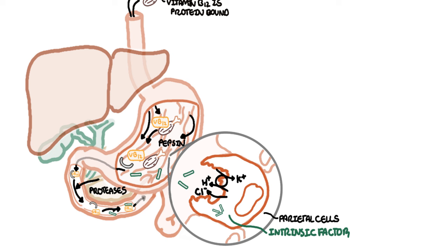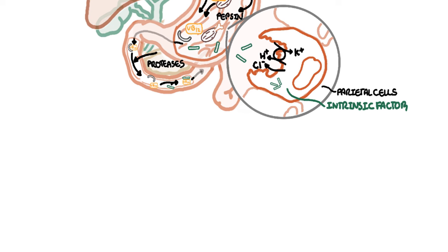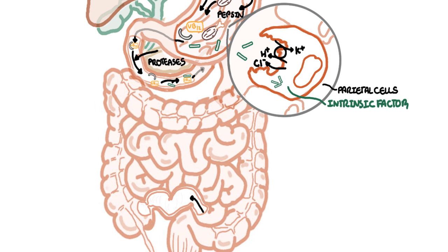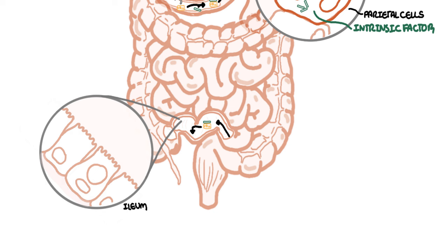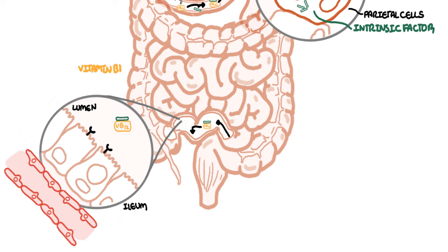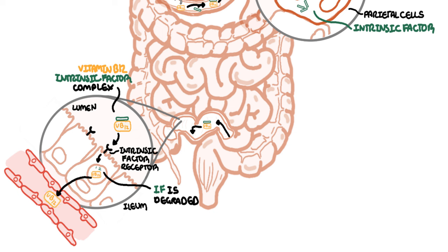The vitamin B12 intrinsic factor complex travels along the small intestine to the end called the ileum where it is taken up by mucosal receptors. The intrinsic factor is degraded in the cell. The vitamin B12 is absorbed into circulation and then binds to another transport protein, a family known as transcobalamin.